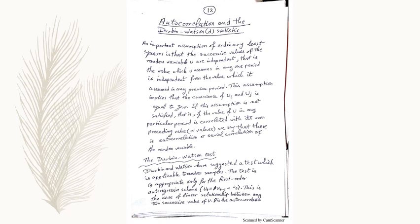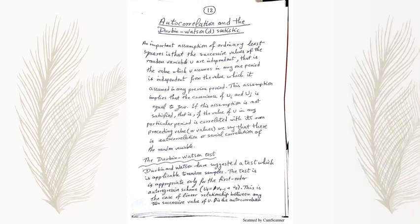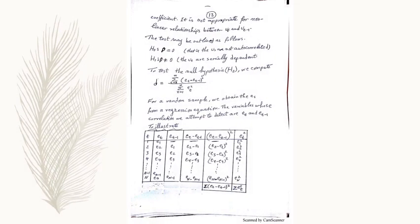we say that there is autocorrelation or serial correlation with the random variable. The Durbin-Watson statistic is used for this test. Durbin and Watson have suggested a test which is applicable to random samples. The test is appropriate only for the first order autoregressive scheme. The test may be outlined as follows: H0 rho is equal to zero, that is, u's are not autocorrelated. H1 rho is not equal to zero, that u's are serially dependent.